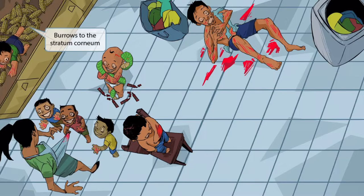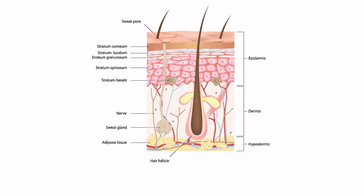It looks like the mom had just shucked all this corn — there's a lot of corn spread all across the counter, creating a total layer of corn. She was going to feed all these monsters before they ransacked the house. This layer of corn represents the stratum corneum of the epidermis. It's this layer that the scabies burrow down to, and from there they travel around and create those serpiginous lines. The stratum corneum is the most superficial layer of the epidermis, as shown in a skin diagram.